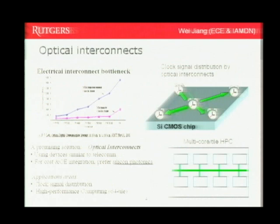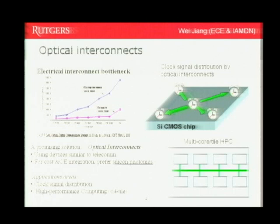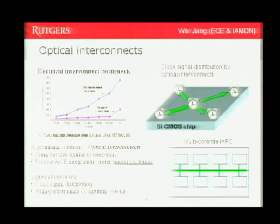Another part of photonics applications is in optical interconnects. This shows the clock rate of the microprocessor and the memory clock rate and their growth trend over the years. The trend shows a gap that is increasing, mainly because of the interconnection bottleneck on the electrical signal lines between the microprocessor and the memory. One way to solve this problem is to use optical signals to transmit data between memory and the microprocessor. A lot of companies, including IBM, are very actively looking at optical interconnect technology for future high-performance computing.